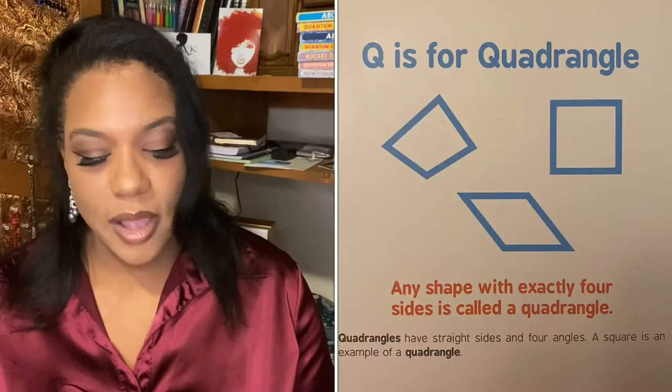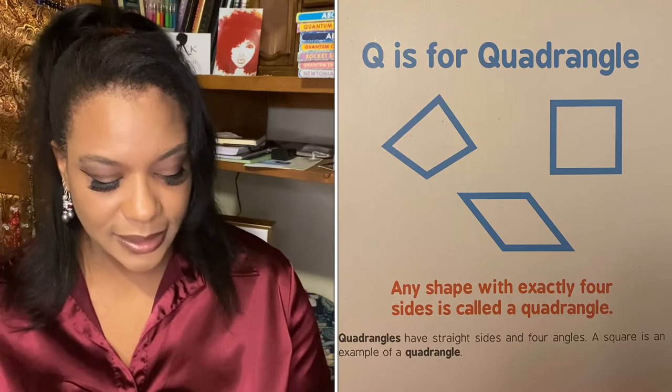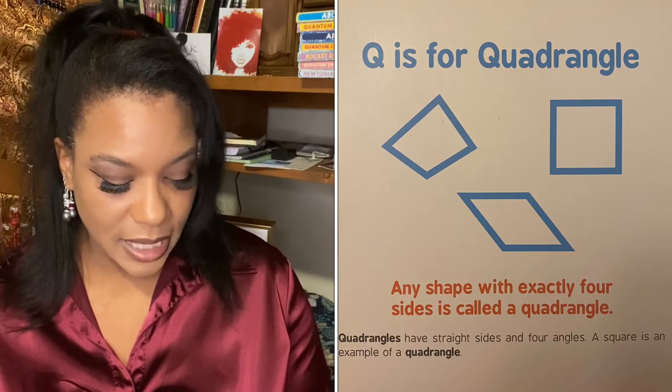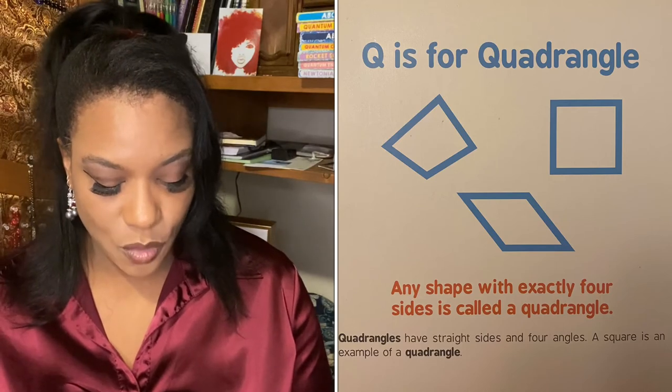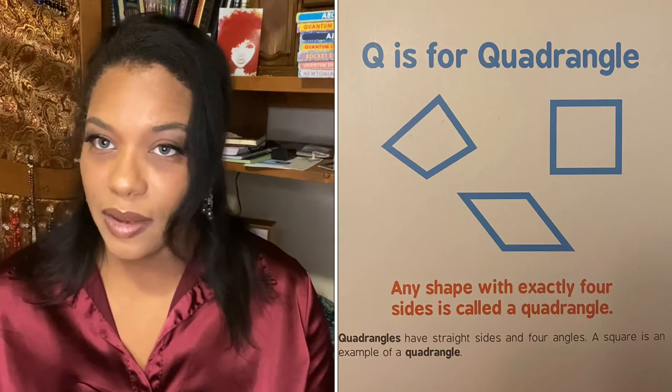Q is for quadrangle. Any shape with exactly four sides is called a quadrangle. Quadrangles have straight sides and four angles. A square is an example of a quadrangle.